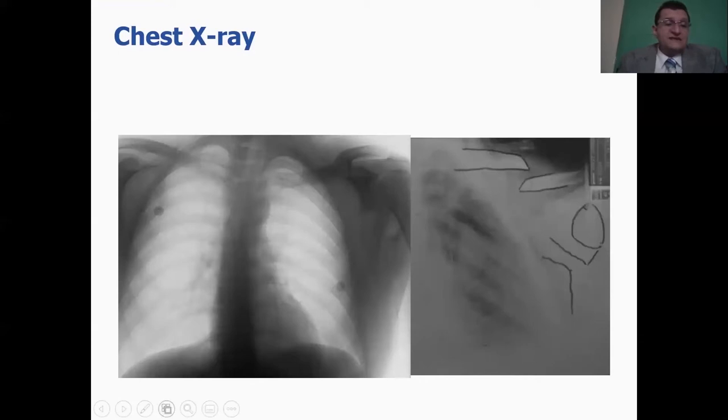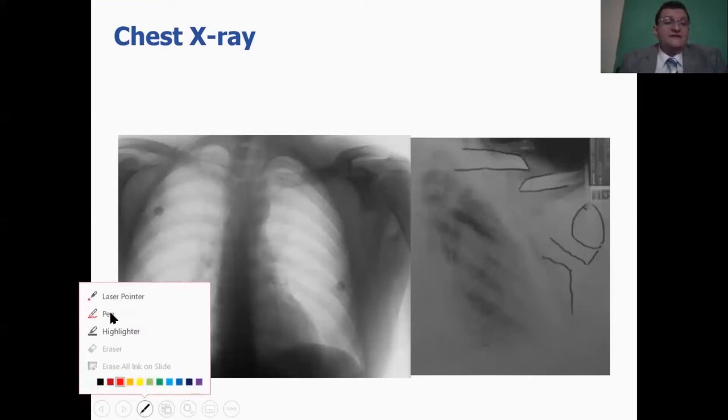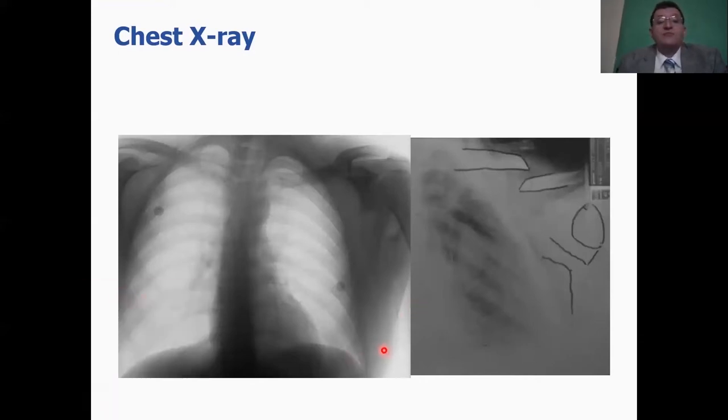Chest x-rays are a must as well. We have to look at the costophrenic angle has to be empty, and look for pulmonary contusions or hemopneumothorax in a chest x-ray.